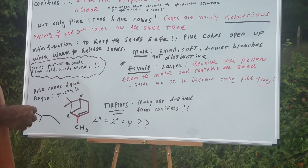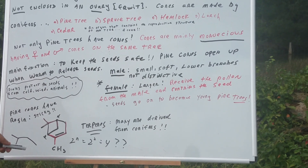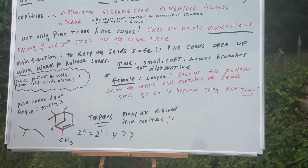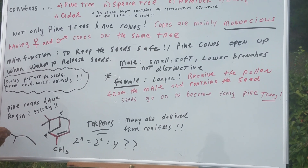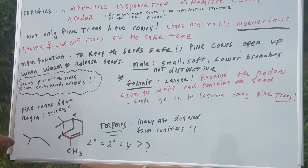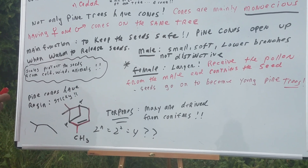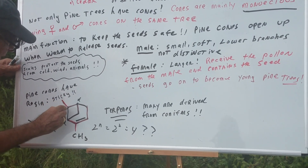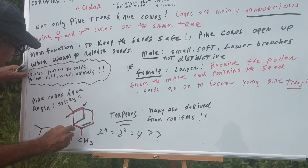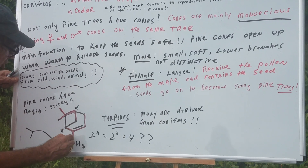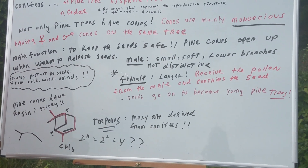Pine cones are very sticky if you touch them because of the resin. They contain what we call terpenes. I drew a terpene here for you. If you remember from organic chemistry, the terpene contains this unit — I call it a fish hook with my organic students — it's called an isoprene unit. This is the isoprene unit: a five-carbon unit. You can see there are two distinct isoprene units, and these are in the terpenes.